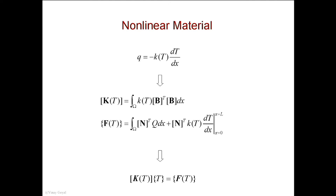Let's take an example of thermal conductivity. Radiation is actually a nonlinear problem as well, because you have temperature to the fourth power in that equation. Here conductivity depends on temperature. When I go to my stiffness matrix — in heat transfer it's the conductance matrix — K is a function of temperature. So K depends on temperature and temperature is what I'm trying to solve for. I cannot just invert this because I don't know K. K depends on T and T is what I'm trying to solve for — a very nonlinear problem.